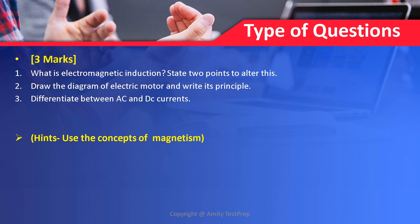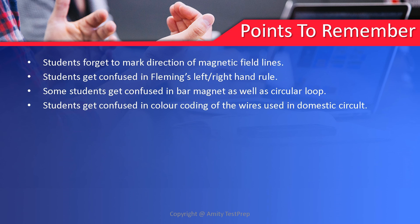A three-marker question could be: what is electromagnetic induction, state two points to alter it, draw the diagram of electric motor and write its principle, or differentiate between AC (alternating current) and DC (direct current). Points to remember — the most common mistakes: students forget to mark the direction of magnetic field lines, or get confused between Fleming's left hand and right hand rule, so prepare these two very well. Some students also get confused between bar magnet and circular loop. Finally, students often get confused in color coding of wires used in domestic circuits, which has been covered in this presentation.